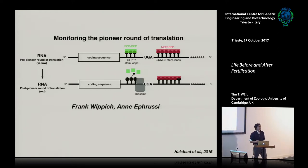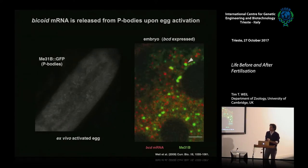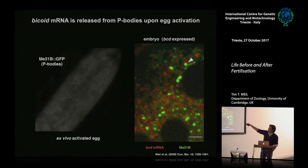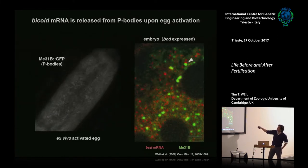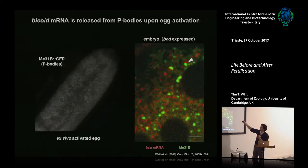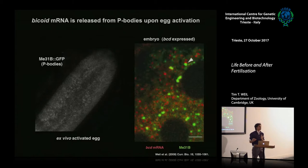This gives us the first opportunity to follow the first round of translation in vivo. We're keen on this because bicoid RNA, the anterior determinant, is inside P-bodies — what happens to allow it to become translated? We can see what happens when the egg begins activation just prior to fertilization: the P-bodies effectively disperse and fall apart. The RNA is no longer overlapping with P-bodies in the embryo, which is when we know the RNA is being expressed.